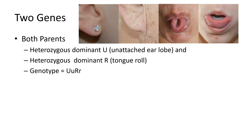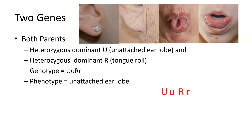This gives us the genotype UuRr. The phenotype for this genotype is an unattached earlobe, and they can roll their tongue.